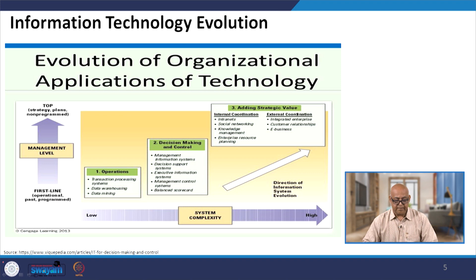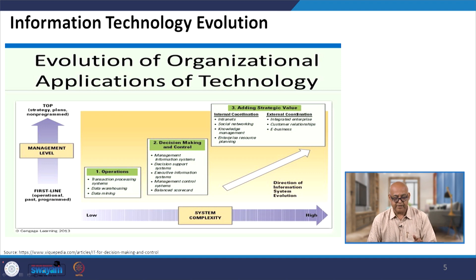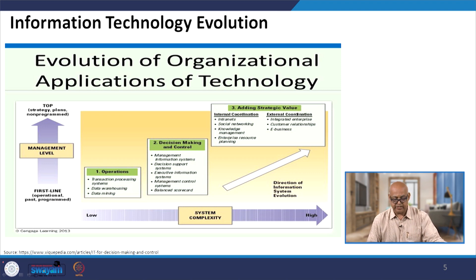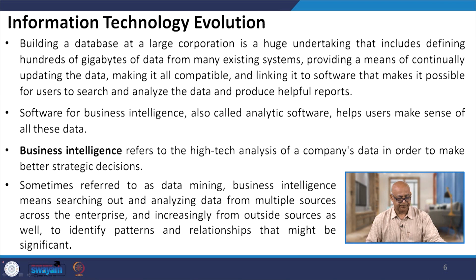System complexity develops from low to high in the direction of information system evolution, progressing from operations to decision making and control, and then to adding strategic value through internal and external coordination.